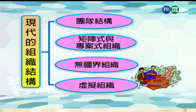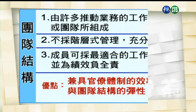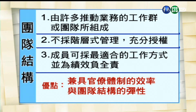以下将分别介绍这四种组织结构。第一，团队结构，是由整个组织中许多推动业务的工作群或团队来组成，它并不存在上下的阶层式管理，因此充分的授权对这种结构非常重要。团队成员可以采取自认为最合适的工作方式，并为其绩效负全责。